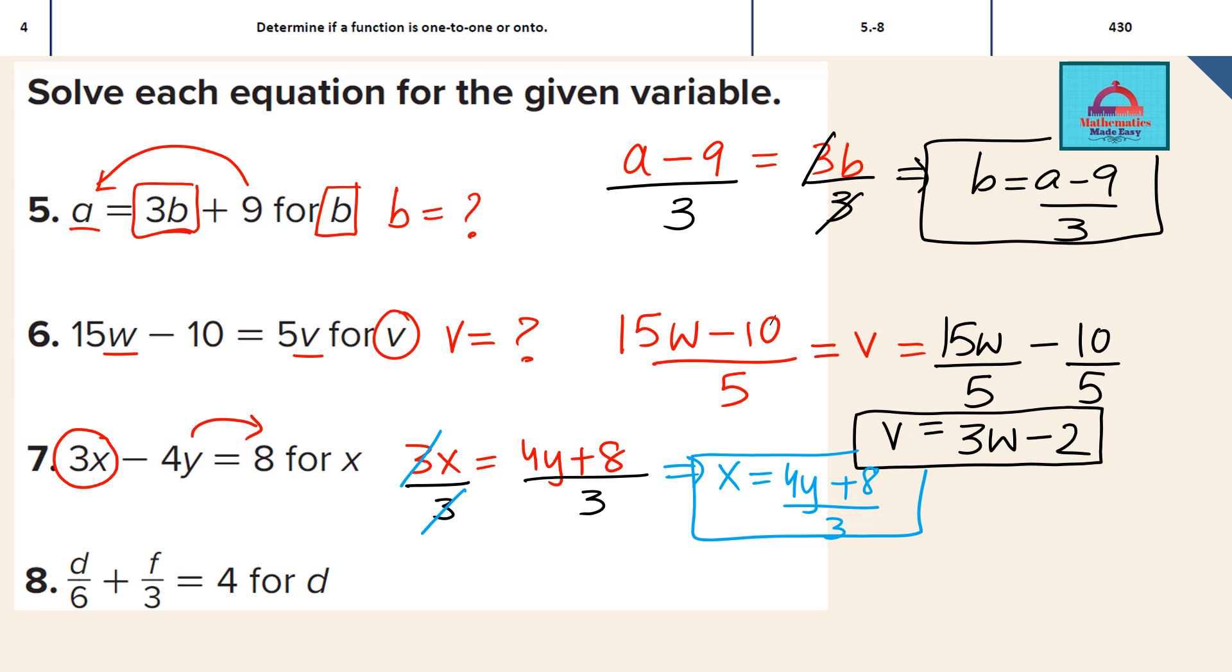Last but not the least, we are going to move to question number 8. So here we need to solve for D. That means I need to keep this D here and move the F on the other side. So this gives me D divided by 6 is going to be 4 minus F by 3. Now, there is one more step that we need to do in order to get the value of D.